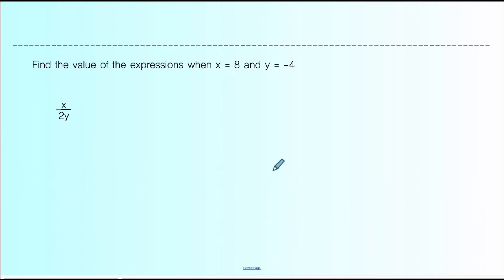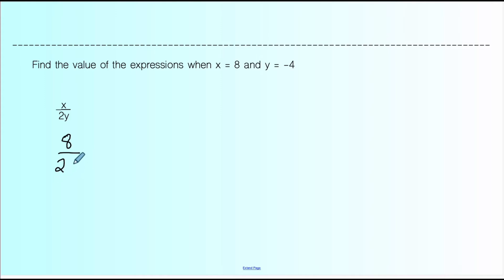Let's do one more. Find the value of this expression when x equals 8 and y equals negative 4. The expression is x divided by 2y. When you have something in fraction form, that's just another way to write division — this is x divided by 2y. When a number is right next to a variable, that's multiplication, so 2 times y. My first step is to substitute in: I'm substituting 8 in for x, and negative 4 for y — I'm putting it in parentheses just to highlight that it's negative.